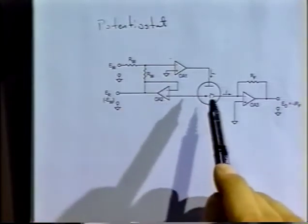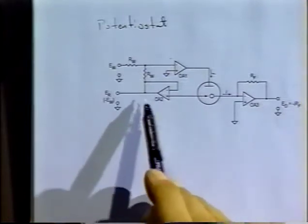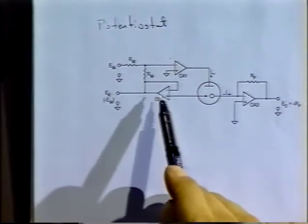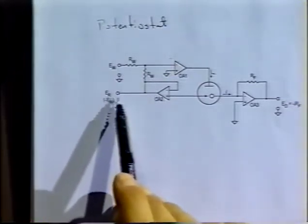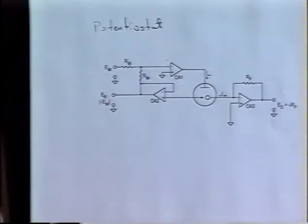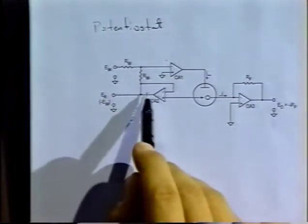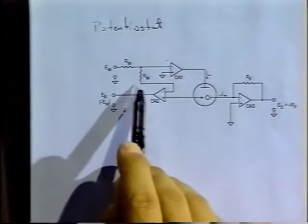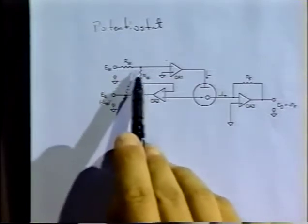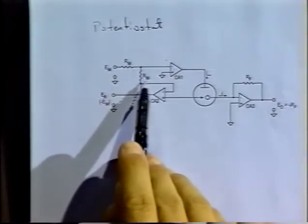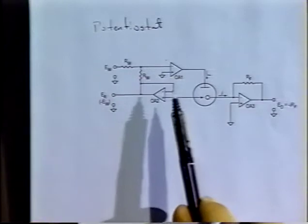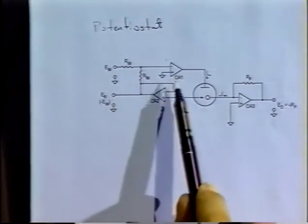OA2 buffers the output of the reference electrode, keeps current from flowing in and out of it, and supplies a low-impedance output voltage equal to the voltage of the reference electrode. You can get the output at E_R as that reference electrode potential. Notice that E_R and E_W — the external working electrode potential — are applied through resistors R_W, and OA1 is actually a summing amplifier. The feedback loop is there, even if it doesn't show it in the usual way.